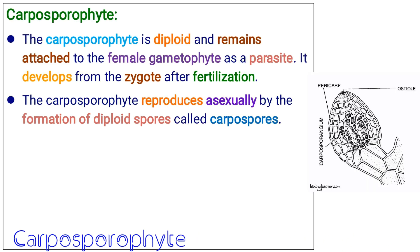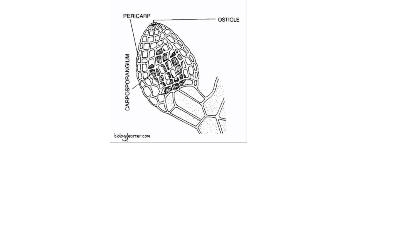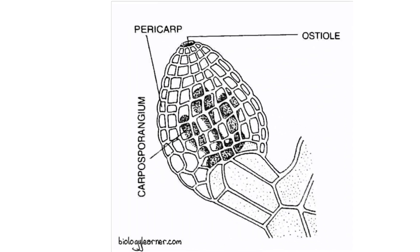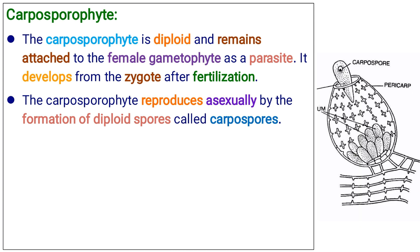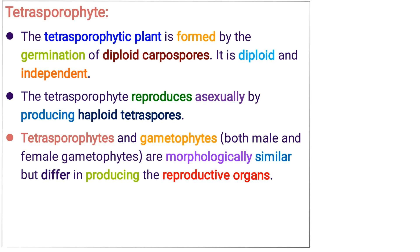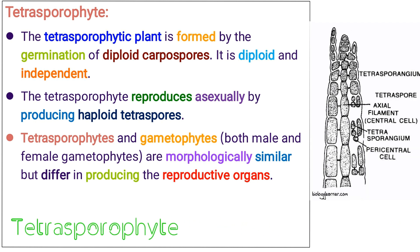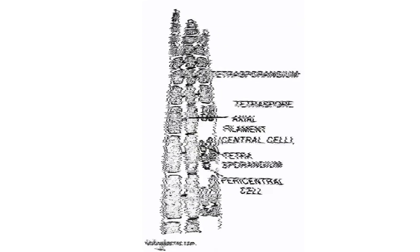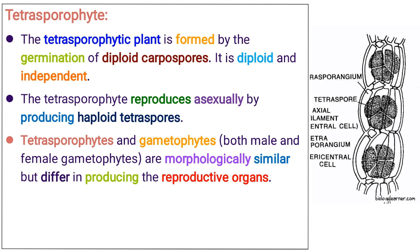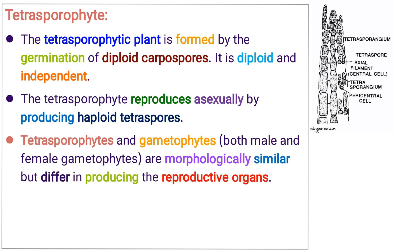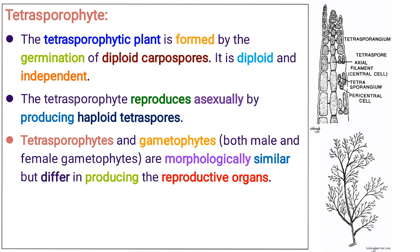The carposporophyte is diploid and remains attached to the female gametophyte as a parasite. It develops from the zygote after fertilization. The carposporophyte reproduces asexually by the formation of diploid spores called carpospores. The tetrasporophytic plant is formed by the germination of diploid carpospores. It is diploid and independent. The tetrasporophyte reproduces asexually by producing haploid tetraspores. Tetrasporophytes and gametophytes are both morphologically similar but differ in producing the reproductive organs.